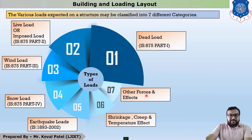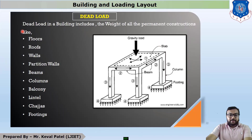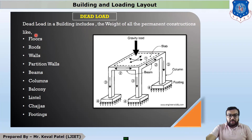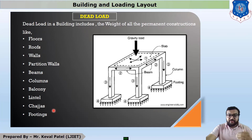Let us discuss about the first load which is dead load. Dead load in a building includes the weight of all the permanent constructions. In any frame building, load transfers from slab to beam, beam to column, and column to footing foundation. In dead load calculation, the components to be considered are: floor load, roof load, wall load, partition walls, beams, columns, balcony, lintel, chajjas and footings.